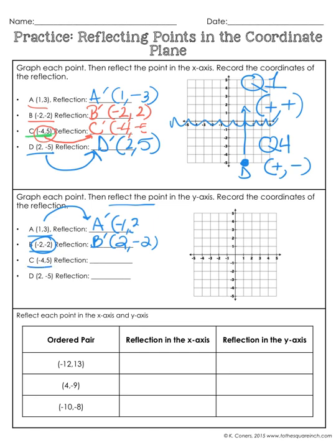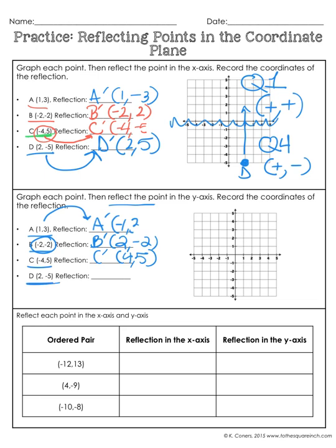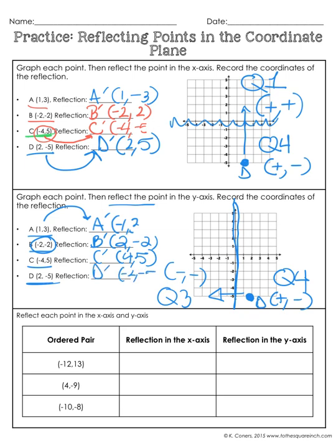Point C is at (-4, 5) — here's point C. We're still reflecting over the y-axis, so we'd have to go to the right. We're going from quadrant 2 to quadrant 1, and quadrant 1 is positive, positive. So C' is (4, 5). Point D is at (2, -5) — here's point D. Still reflecting over the y-axis, so we'd have to go to the left to cross it. We're starting in quadrant 4, which is positive, negative, going to quadrant 3, which is negative, negative. So D' is (-2, -5).